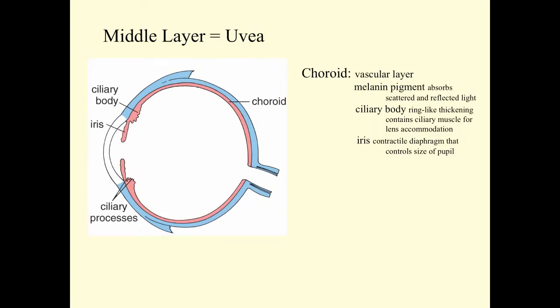The uvea is the middle layer of the eye. We think of it mostly as the choroid. It's a vascular layer. There are melanin pigments in the choroid that absorb scattered and reflected light. The ciliary body is a ring-like thickening that contains ciliary muscles, which function in lens accommodation. And the iris is the contractile diaphragm that controls the size of the pupil, and the pupil is essentially the opening in the iris.